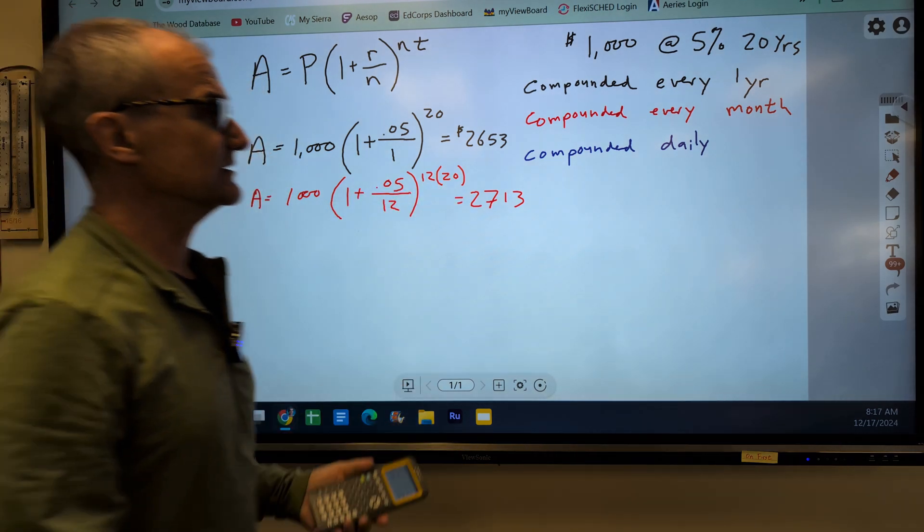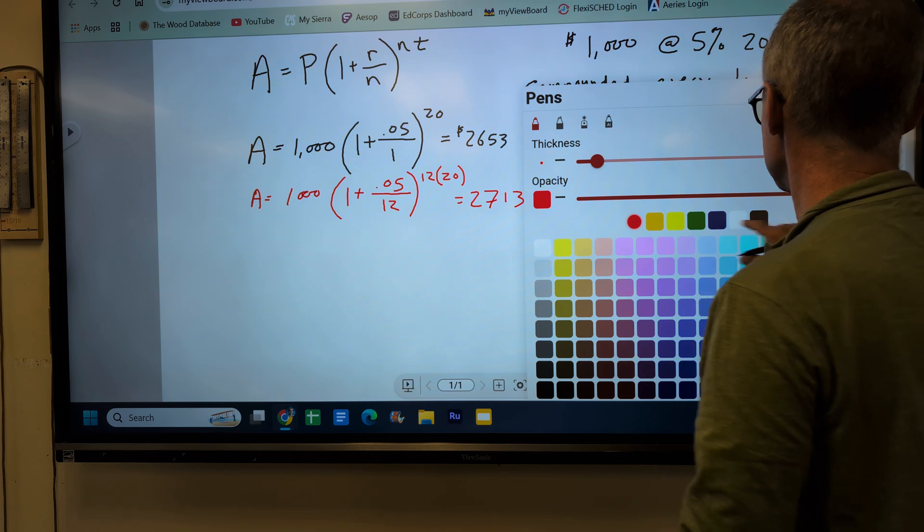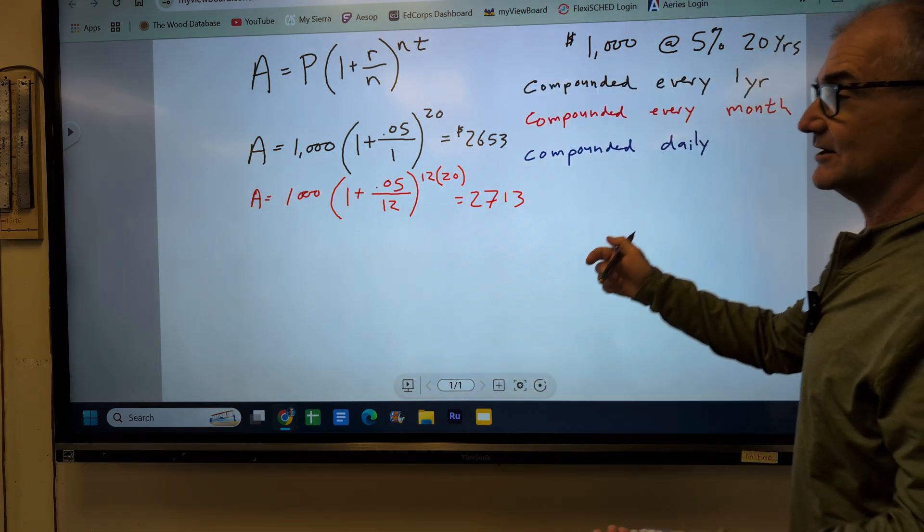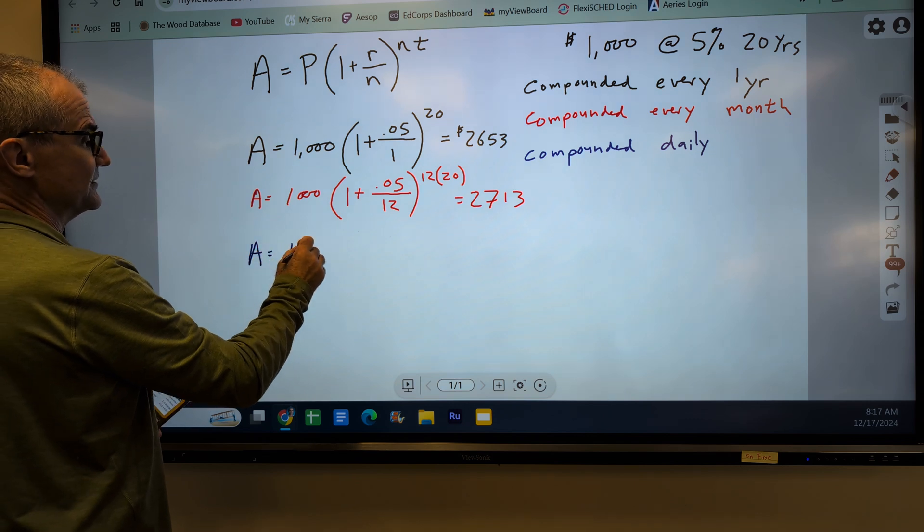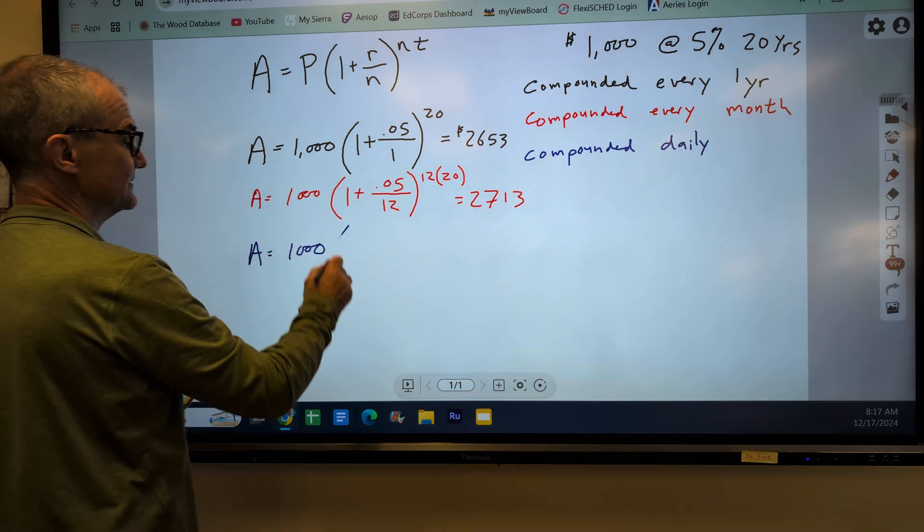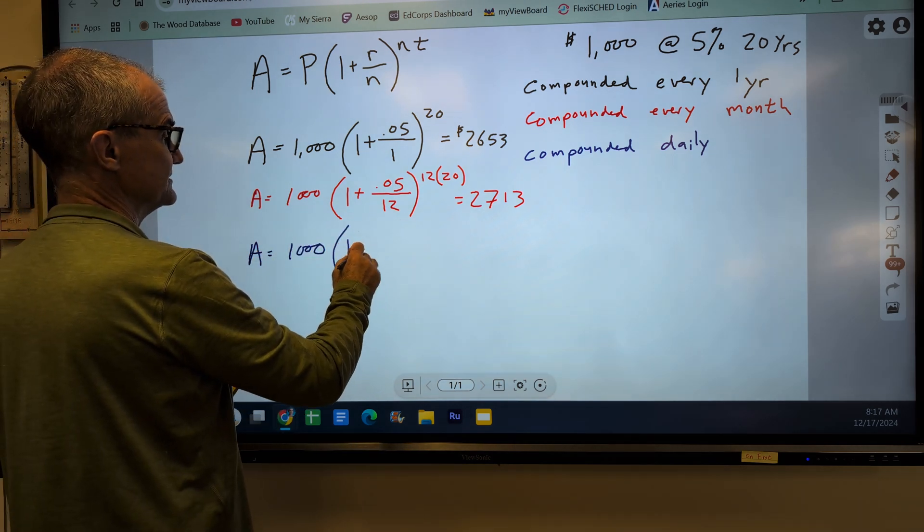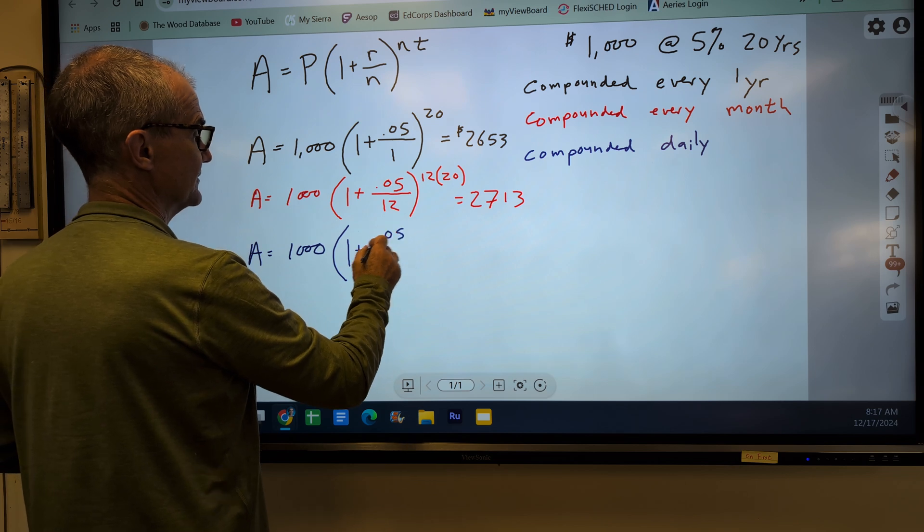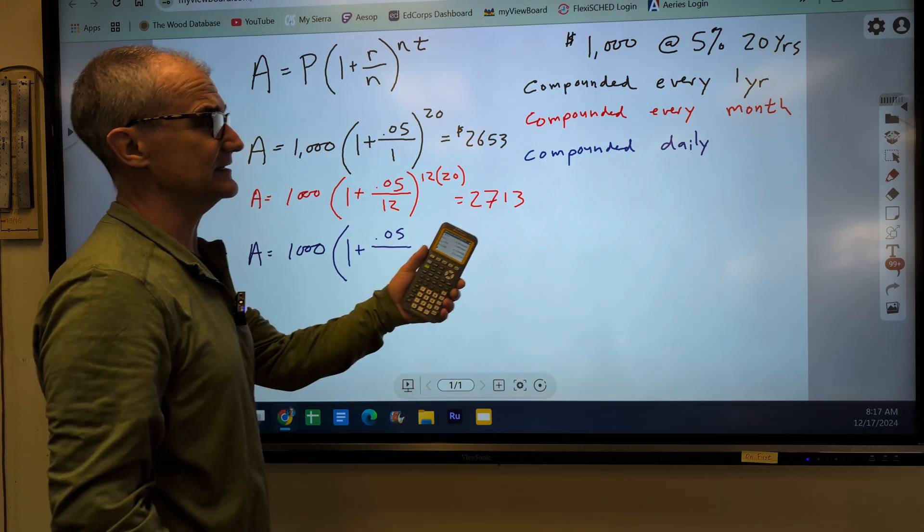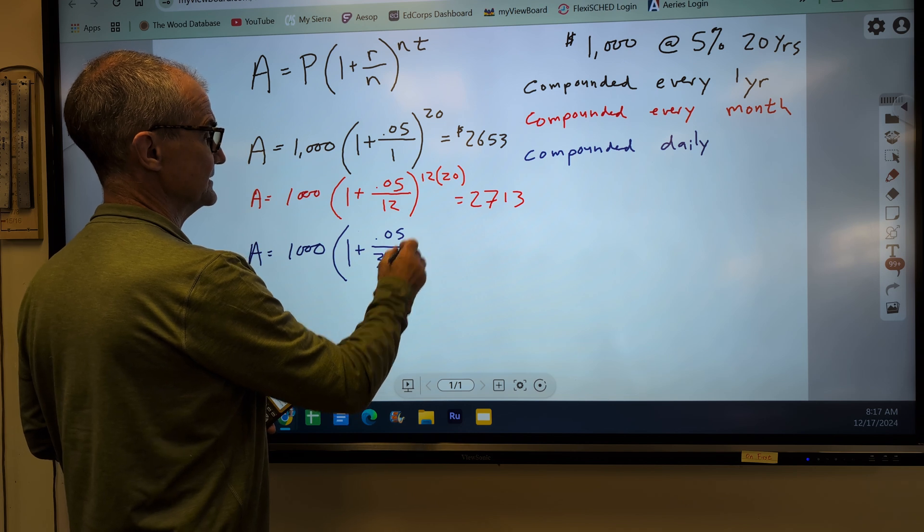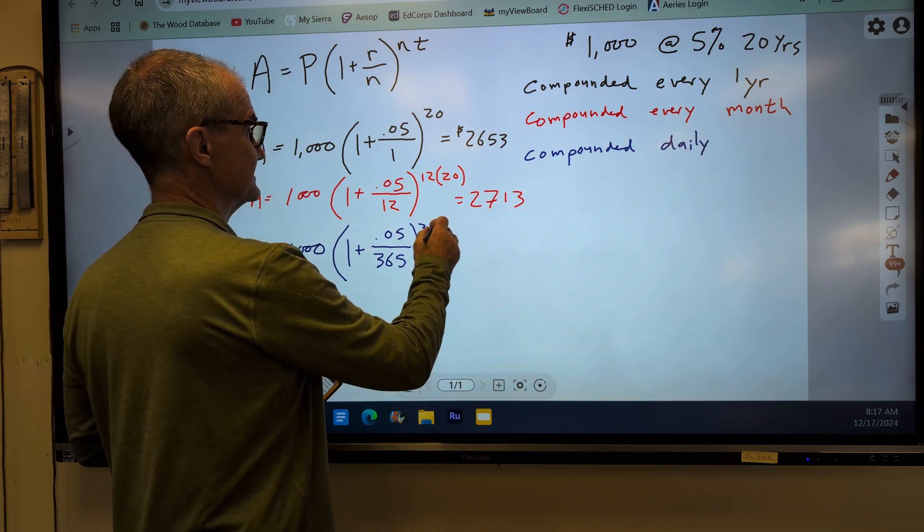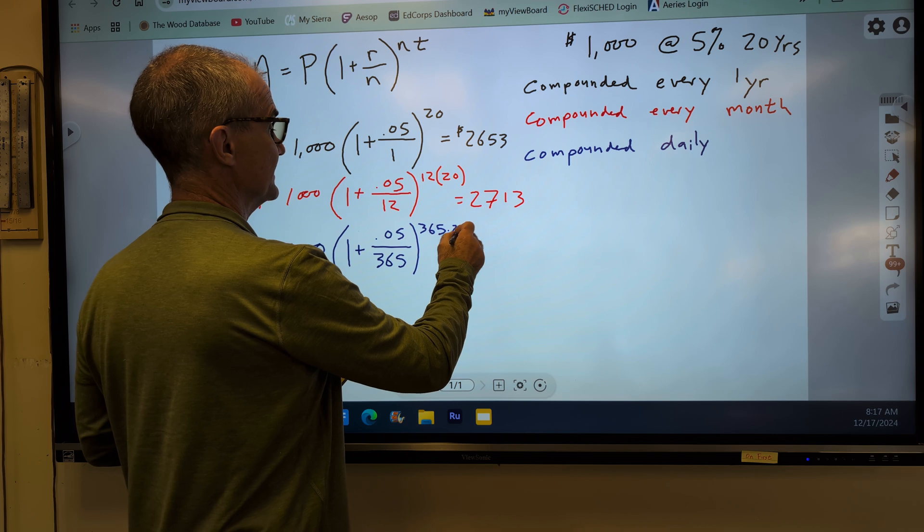Now let's take a look at if we are compounding daily in blue here. Compounding daily, all of the amounts, principles are the same. So we still start with $1,000 in the bank. It's going to be 1 plus our interest rate. We are now compounding daily. So 365 periods in a year to the power of 365 times 20.